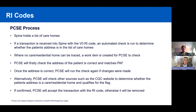The PCSE process starts with Spine holding a list of care homes via their postcodes. If a transaction is received with the V0 RI code, an automated check runs to determine whether the patient's address matches the list of care homes. Where no care home can be traced, a work item is created for PCSE to check. PCSE will firstly check the patient's address is correct, then run the check again. If the address still doesn't match, PCSE will check sources such as the CQC website to determine whether the address qualifies as a care or residential home. If confirmed as a CQC-registered institution, PCSE will accept the RI code; otherwise, it will be removed.